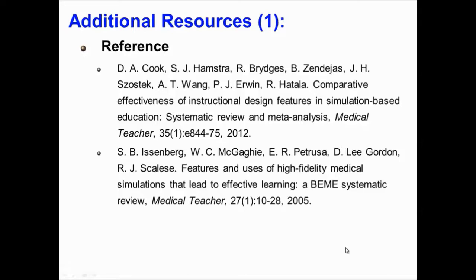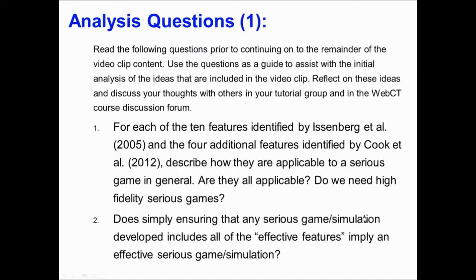This brings us to the end of our discussion on effective features, and I just want to point out the references: first, Cook et al. in 2012, and second, Eisenberg et al. in 2005. This brings us to our list of analysis questions. Number one: For each of the ten features identified by Eisenberg et al. in 2005 and the four additional features identified by Cook et al. in 2012, describe how they are applicable to a serious game in general. Are they all applicable? Do we need high-fidelity serious games? Number two: Does simply ensuring that any serious game or simulation developed includes all of the effective features imply an effective serious game or simulation?